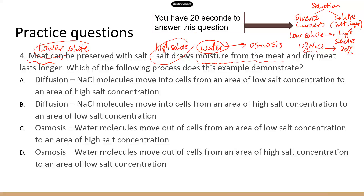This is how salt removes moisture from meat and dries it, allowing it to last longer. It's an osmosis process — water molecules move out of the cells of the muscle tissues from an area of low salt concentration to high salt concentration. So C is the correct answer.